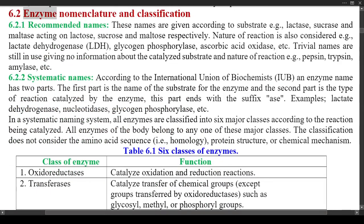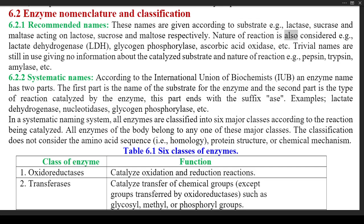Section 6.2: Enzyme Nomenclature and Classification. 6.2.1 Recommended Names — these names are given according to substrate; for example, lactase, sucrase, and maltase acting on lactose, sucrose, and maltose respectively. The nature of the reaction is also considered; for example, lactate dehydrogenase (LDH), glycogen phosphorylase, ascorbic acid oxidase, etc.